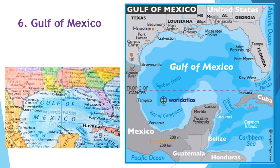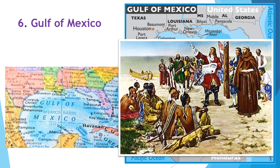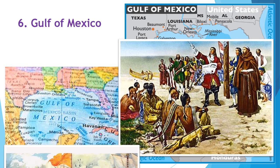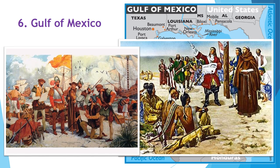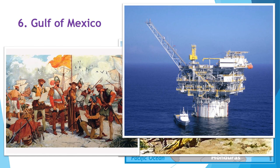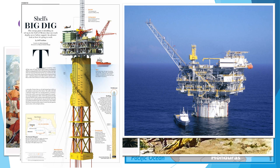The Gulf of Mexico is a large bay that borders the southeastern border of the United States and the eastern border of Central America. This body of water merges with the Atlantic Ocean and was first explored by the French and Spanish. Oil has been found in the ground underneath the Gulf of Mexico, and several companies drill for oil in this area. Draw an oil well next to your note on the Gulf of Mexico.